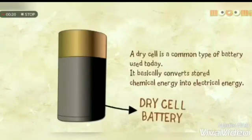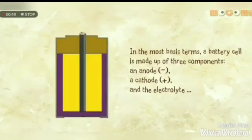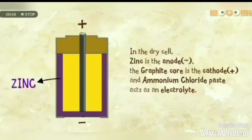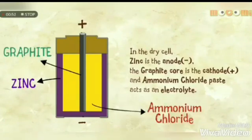Batteries provide portable, convenient sources of energy for powering devices without wires or cables. A dry cell is a common type of battery used today. It basically converts stored chemical energy into electrical energy. In the most basic terms, a battery cell is made up of three components: an anode, a cathode, and the electrolyte. In the dry cell, zinc is the anode, the graphite core is the cathode, and ammonium chloride paste acts as an electrolyte.